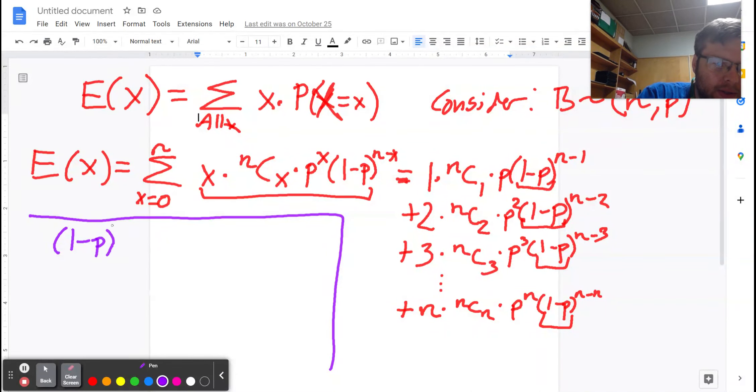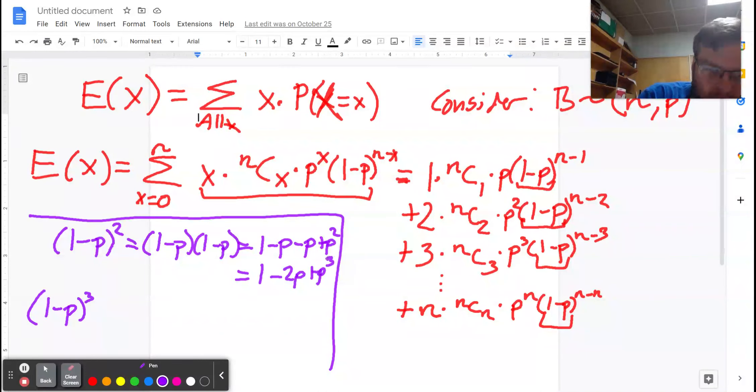What I want you to just watch for a second is what happens as I raise one minus p to bigger and bigger powers. So let's look at one minus p squared. So that'd be one minus p times itself. That's going to be one times one, negative p times one, negative p times one, negative p times negative p. So we end up with one minus two p plus p to the third power. If I did one minus p to the third power, sorry, this should be a second power. I lied a second ago.